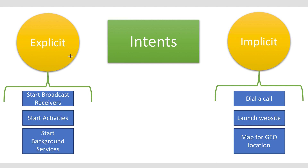An intent object is just a bundle of information. It contains information of interest to the component that receives the intent, such as the action to be taken and the data to act on, plus some information of interest to the Android system, such as the category of the component that should handle the intent.